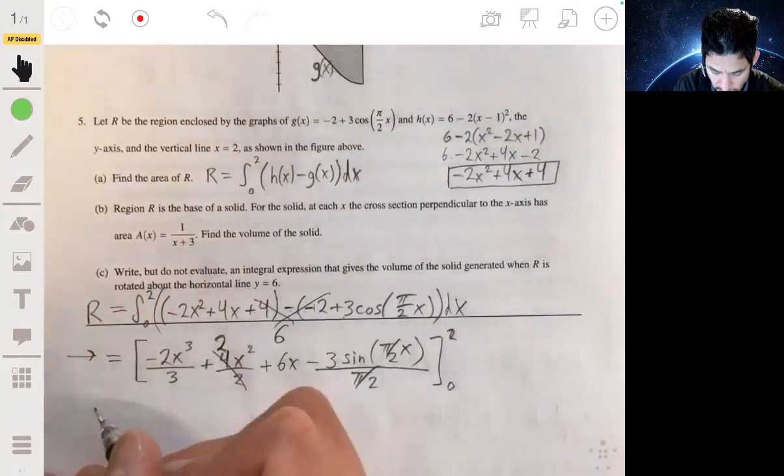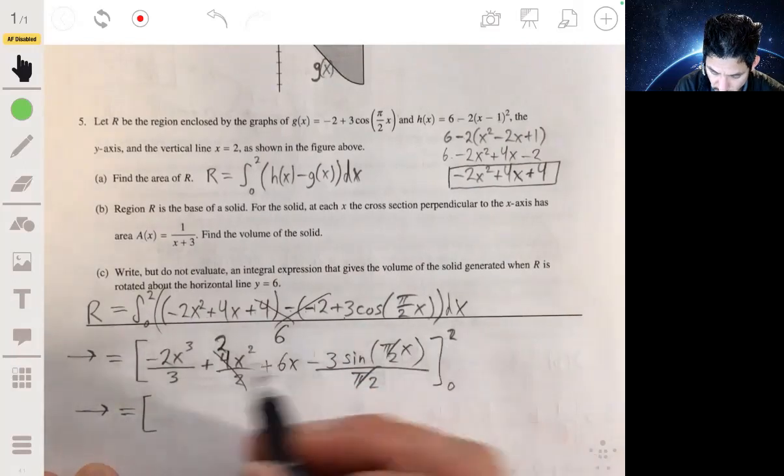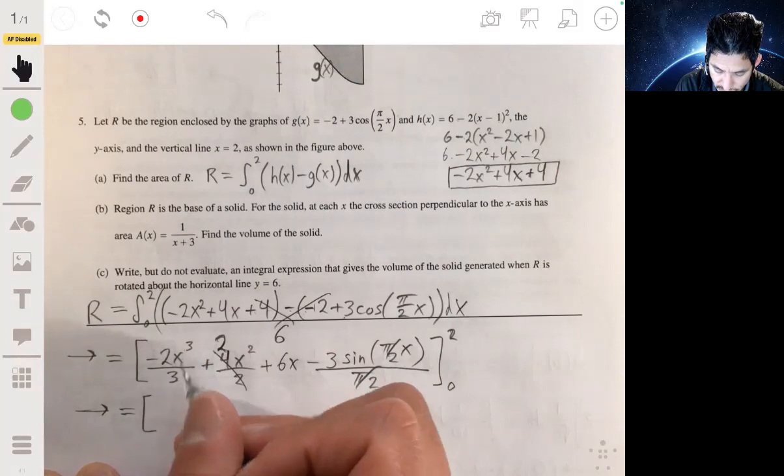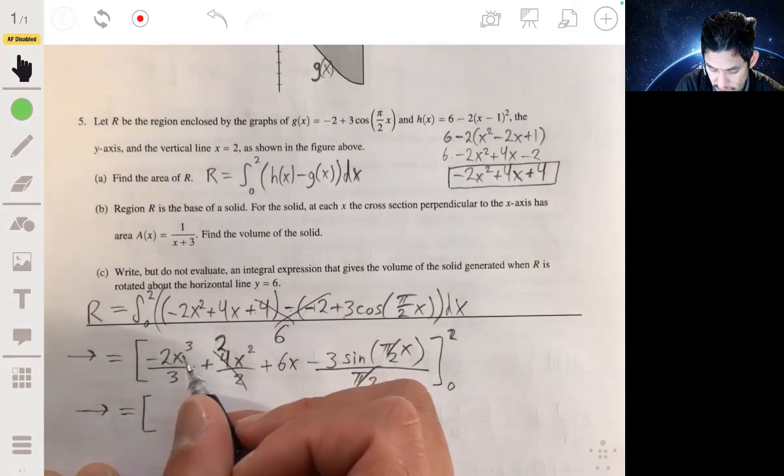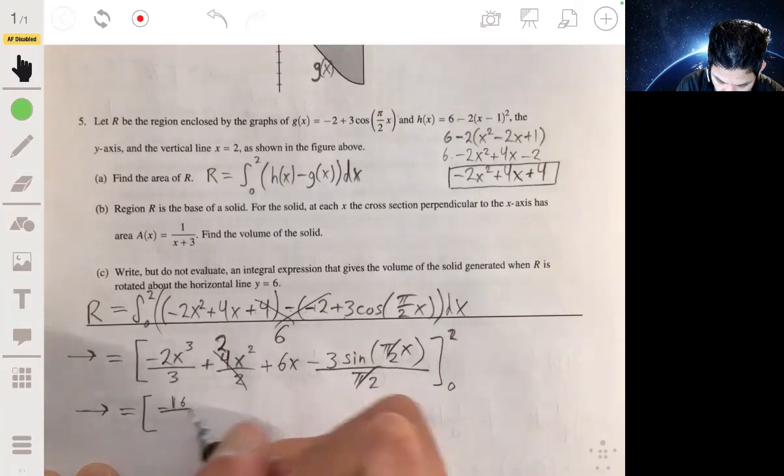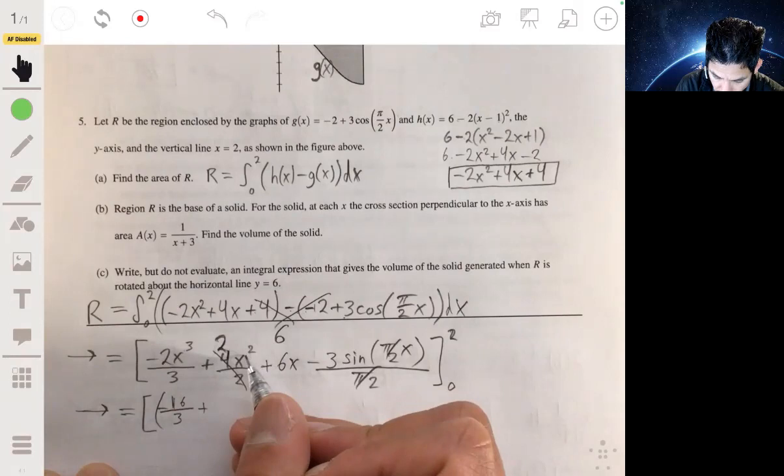And again, we need to be careful we don't mess up by plugging our values in. So plug in 2 first, we get negative 2 times 8, or negative 2 times 2 cubed, negative 16 over 3, plus 2 times 4.